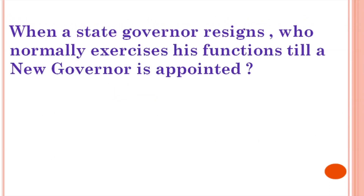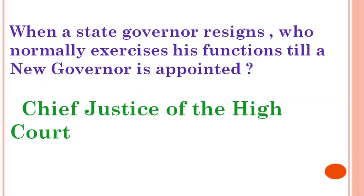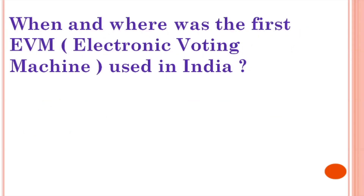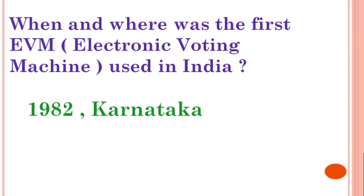When a state governor resigns, who normally exercises his functions till a new governor is appointed? Answer: the Chief Justice of the High Court. When and where was the first EVM — Electronic Voting Machine — used in India? Answer: 1982, Karnataka. Thank you, viewers.